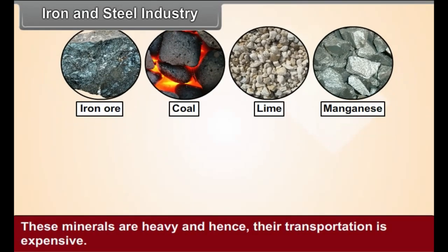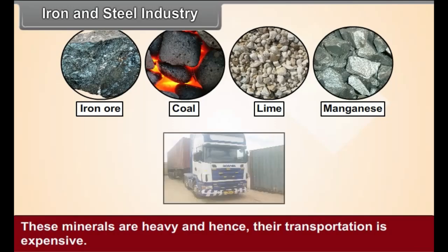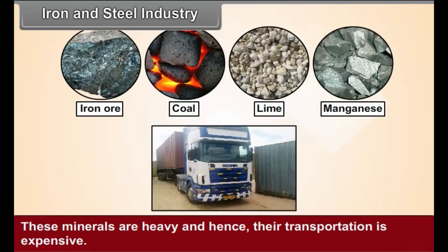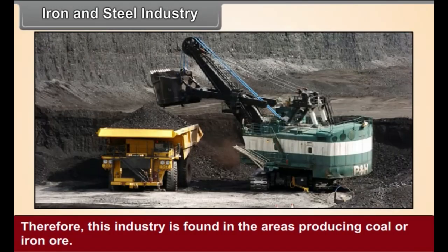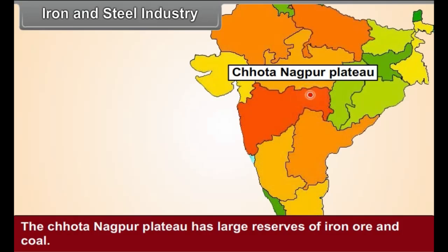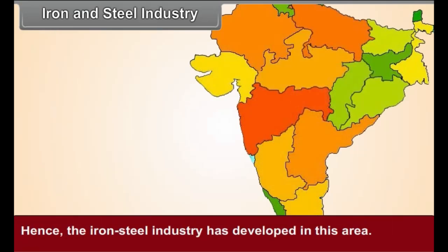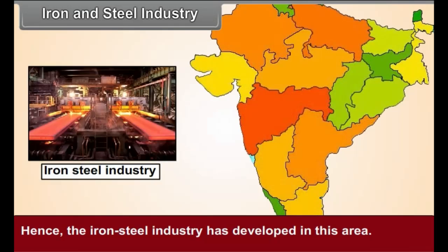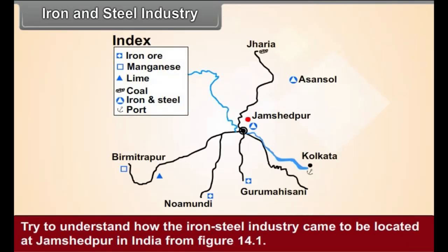These minerals are heavy and hence their transportation is expensive. Therefore, this industry is found in areas producing coal or iron ore. The Chhota Nagpur Plateau has large-scale reservoirs of iron ore and coal. Hence, the iron and steel industry has developed in this area. Try to understand how the iron and steel industry came to be located at Jamshedpur in India from figure 14.1.